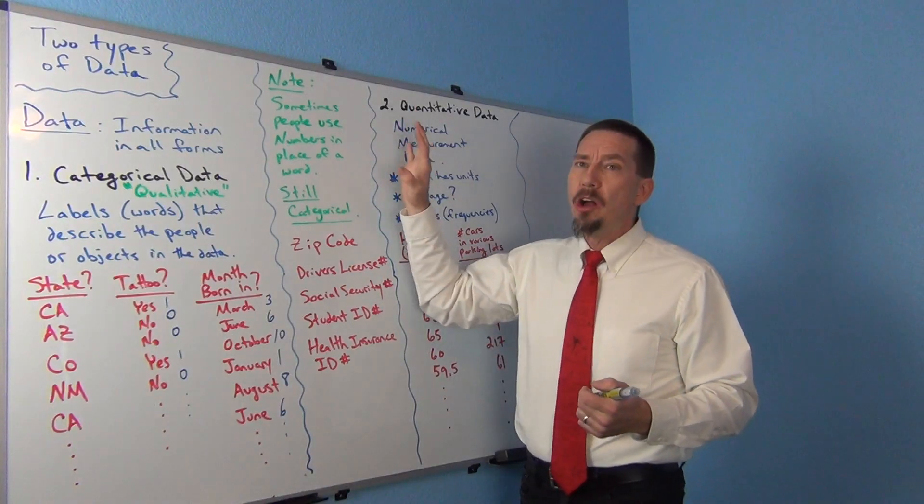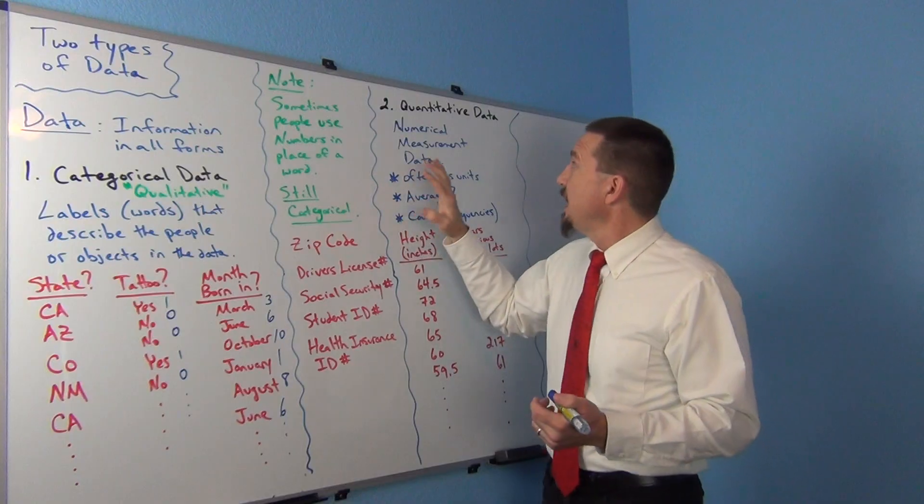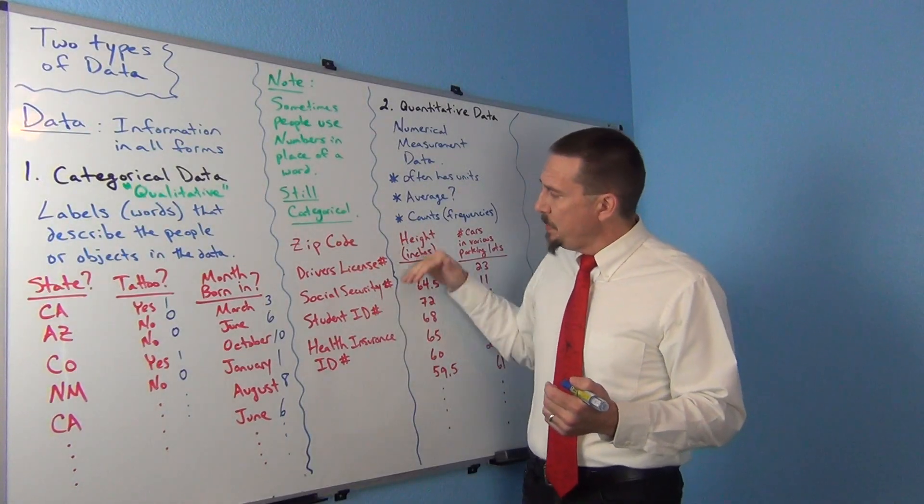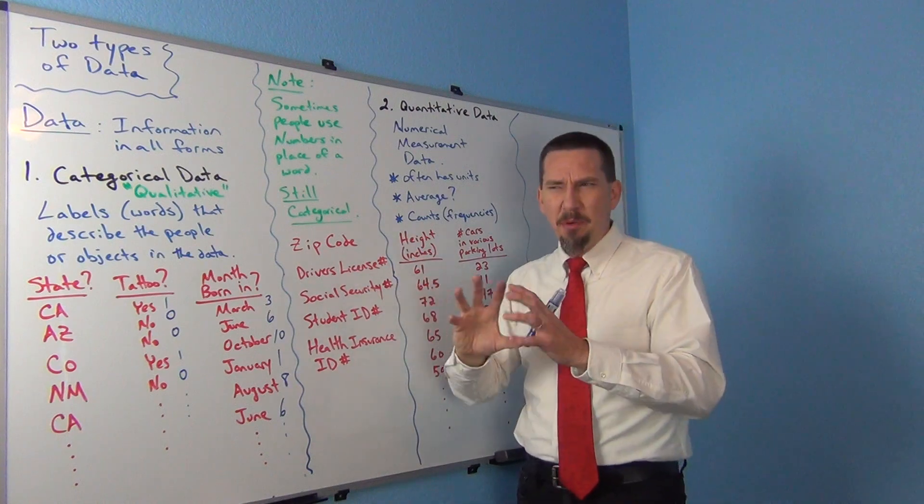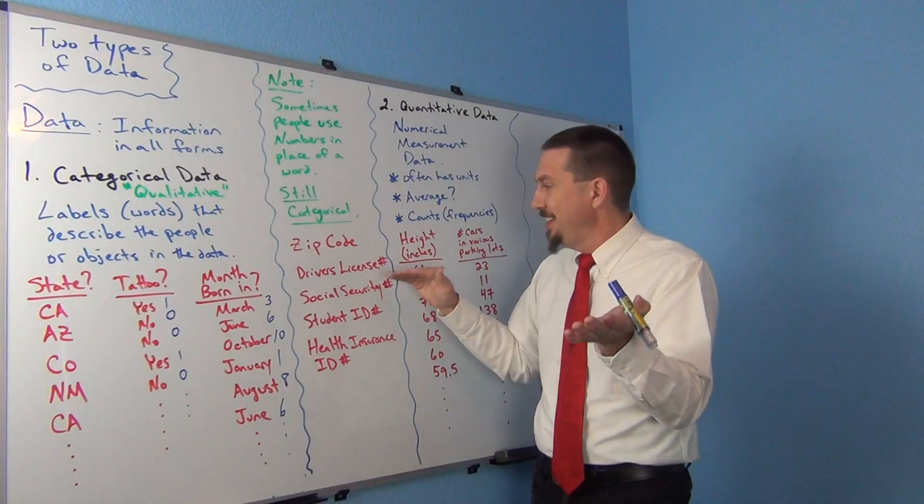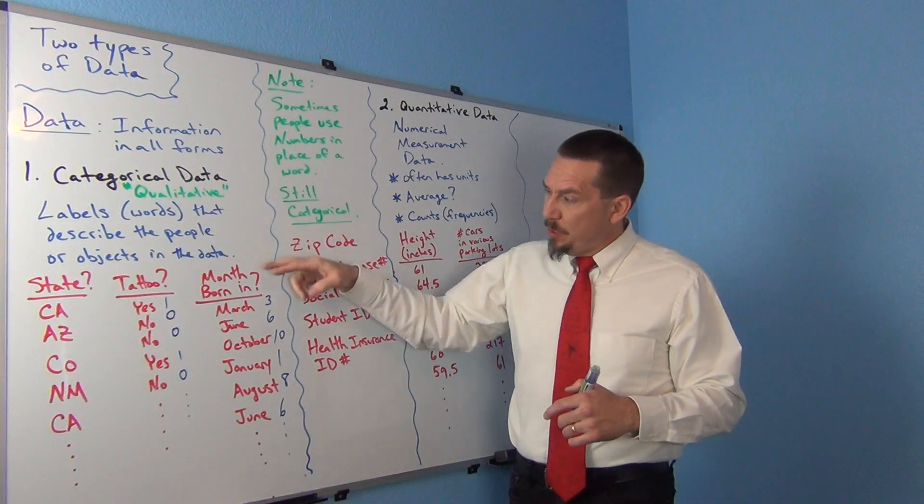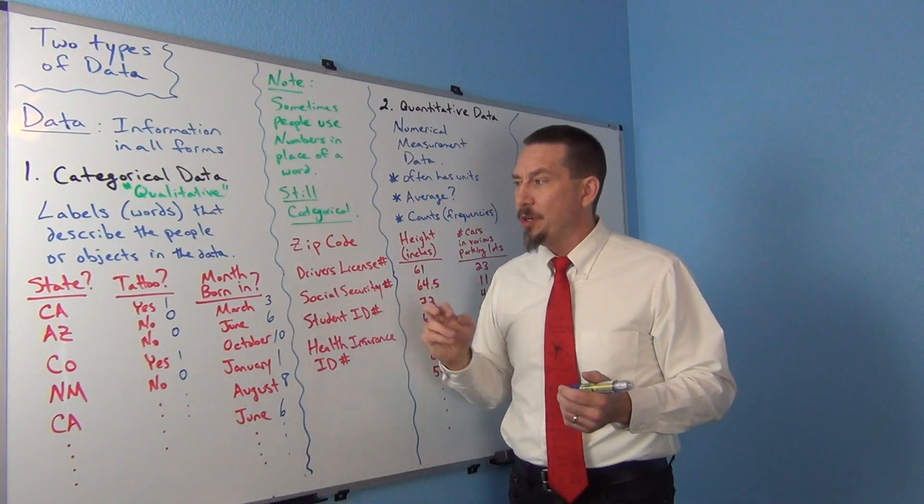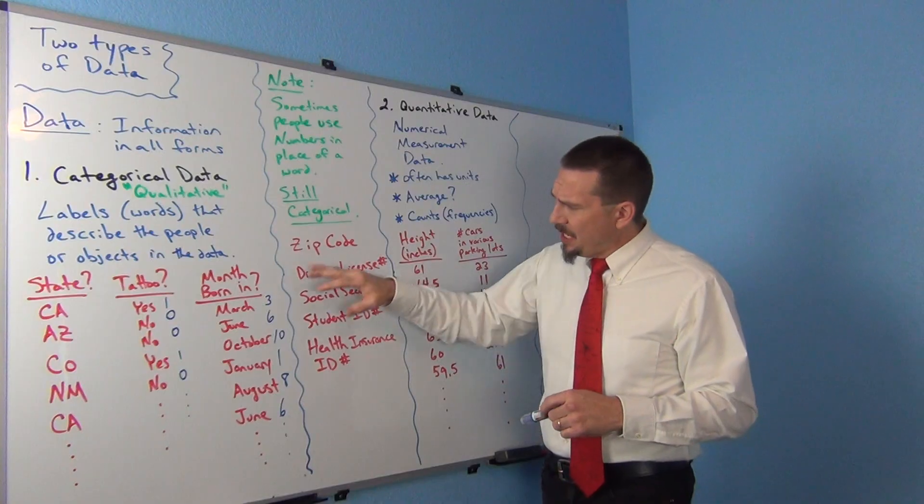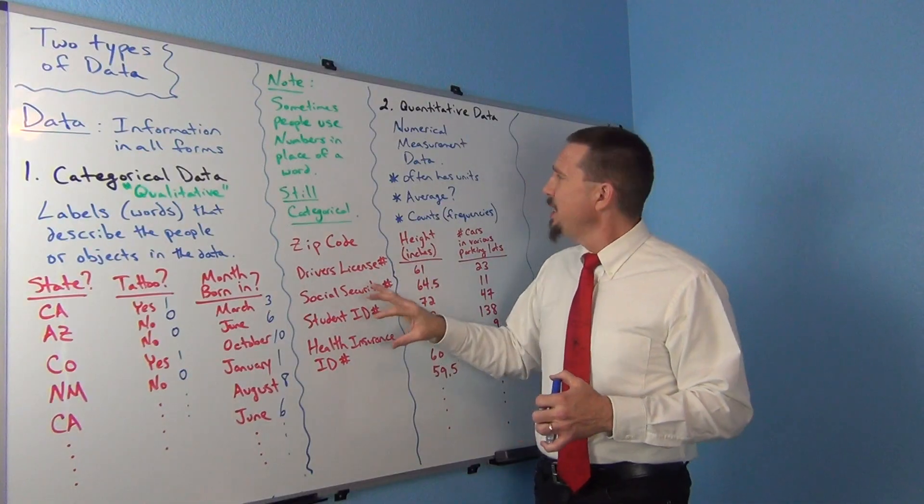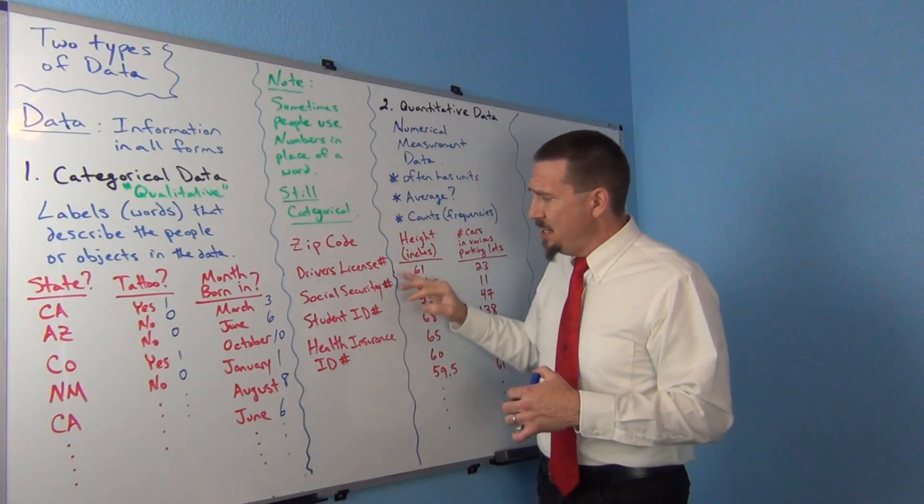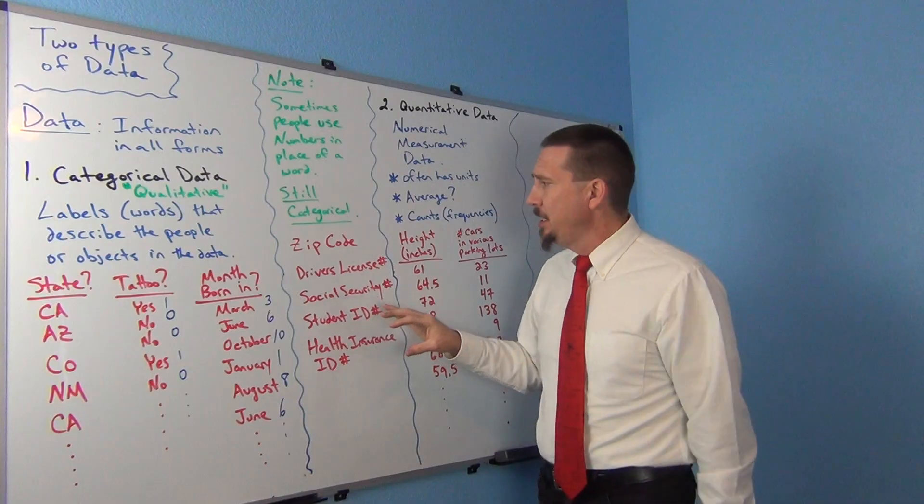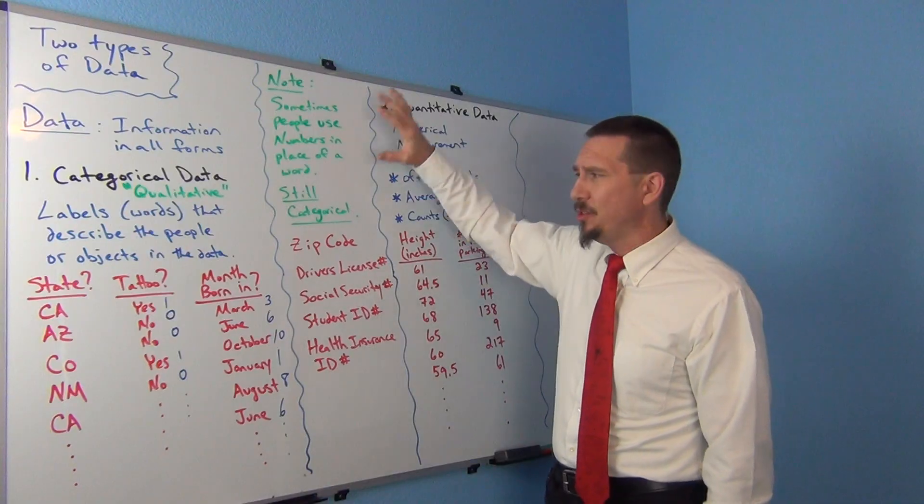The other ones that can be very tricky are what we call identification numbers. So identification numbers like driver's license number, social security number, student ID number, your health insurance ID number. Now these are numbers, but again, they're really just used to identify you. They're not really used to measure or count something. They're not measurement data. So not all numerical data is actually quantitative. Some of the numerical data you see might be categorical. These kind of all still fall in the categorical data genre.